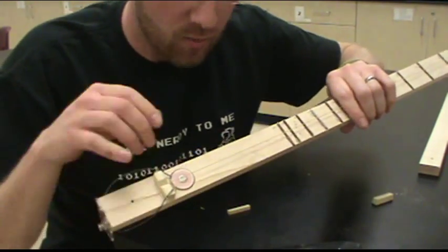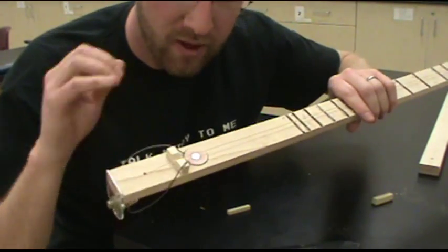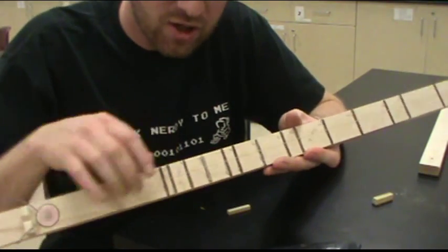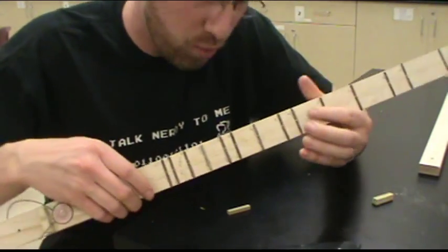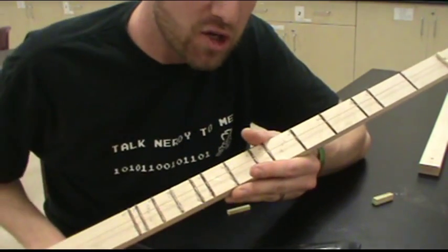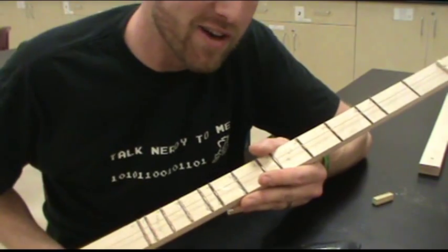I need that string to be high enough so it doesn't buzz on the pickup, but low enough so that the pickup can pick it up. The other reason we want it to be low is if your string action is too high, if we leave that string way up and we have to push really hard down in order to get the string down to the fret, we increase the tension on the string when we do that and the guitar plays out of tune.